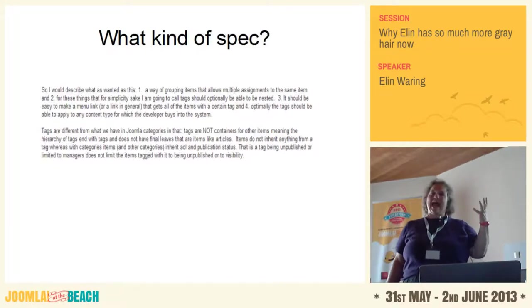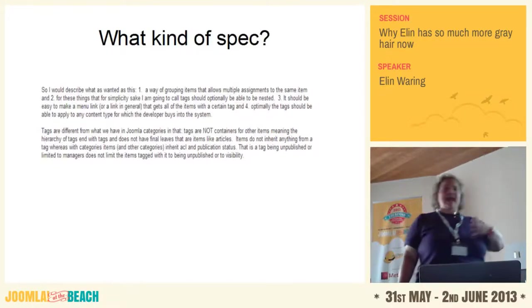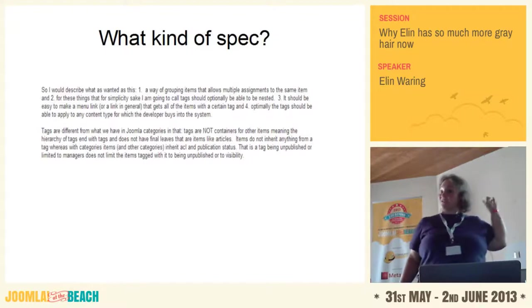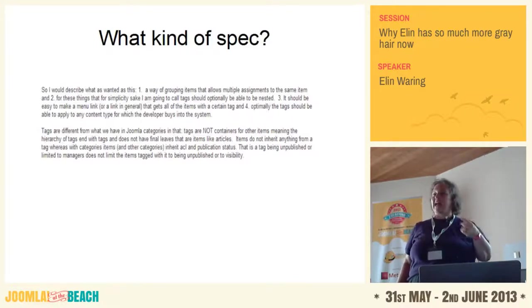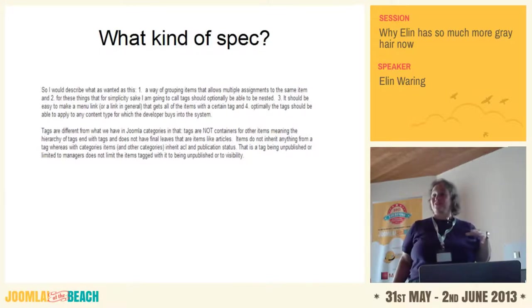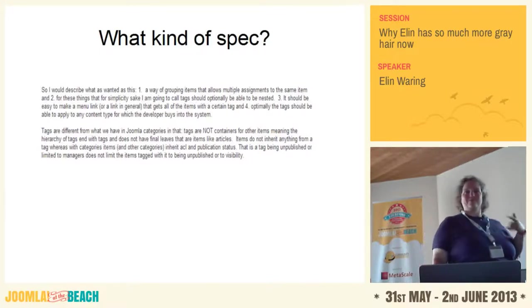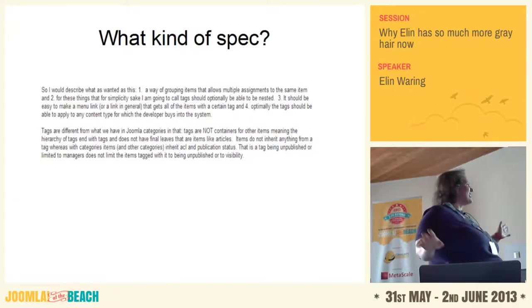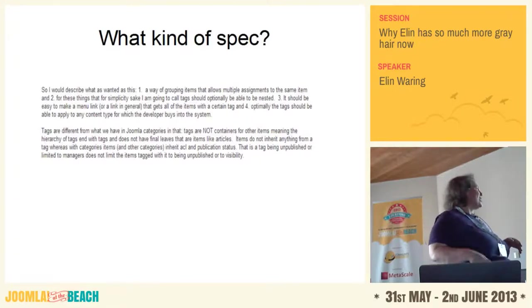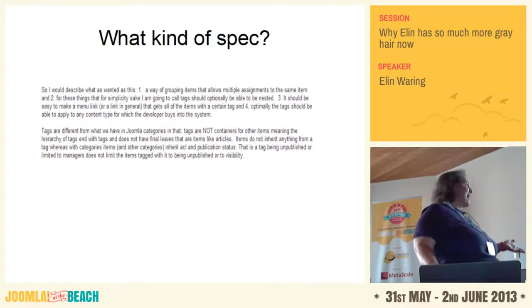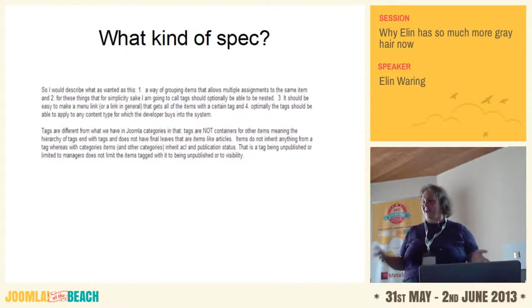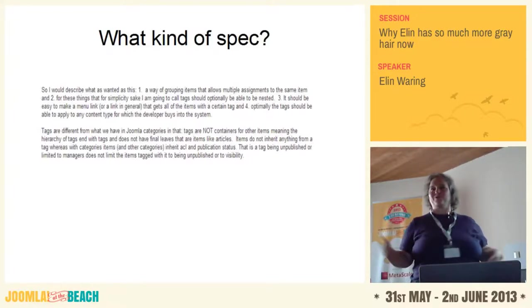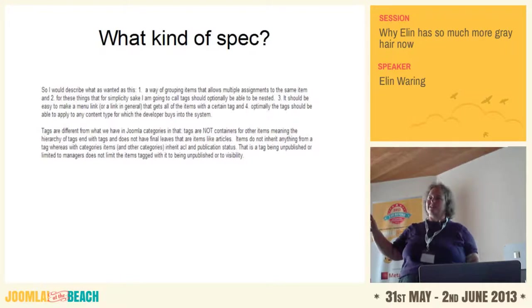The spec really was just four points. Tagging is a way of grouping items that allows multiple assignments to the same item. From the Joomla community I was really hearing that nesting mattered — they really liked the way categories nest. In fact, at JoomlaWorld as I was getting on the shuttle to the airport, Janik said to me, 'Without nesting it'll be worthless.' So when Andrew made that comment about not implementing nesting, that was a point where I had to say: no, this is a stand I'm making.